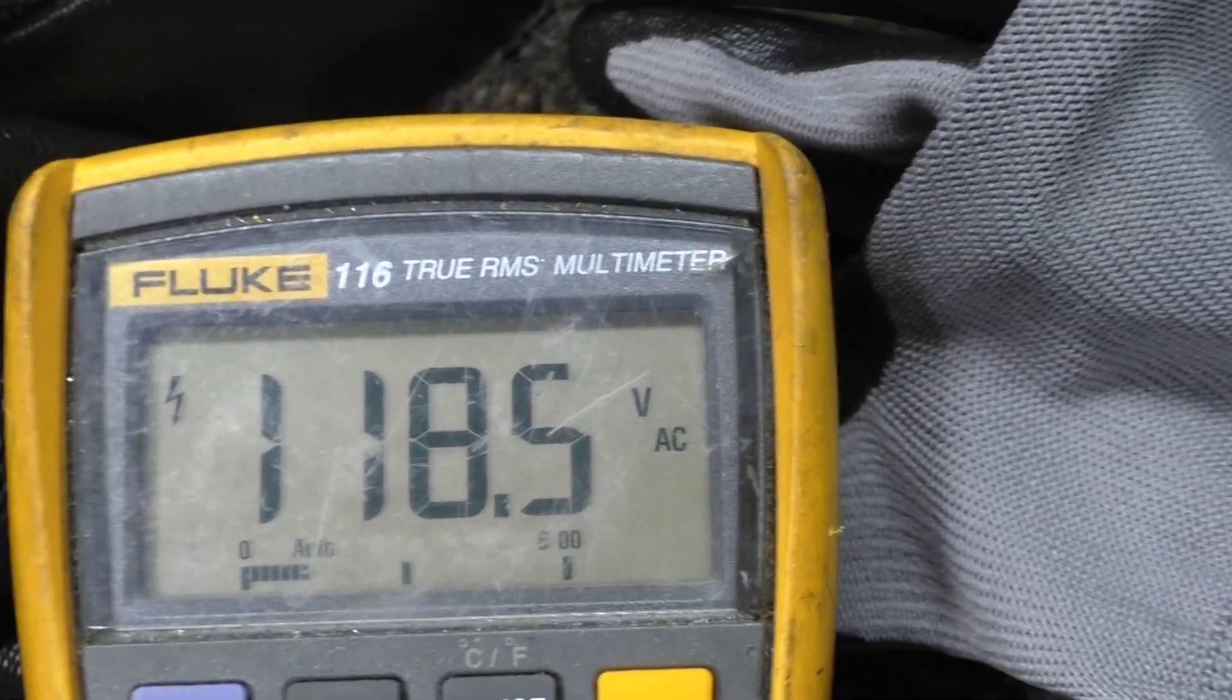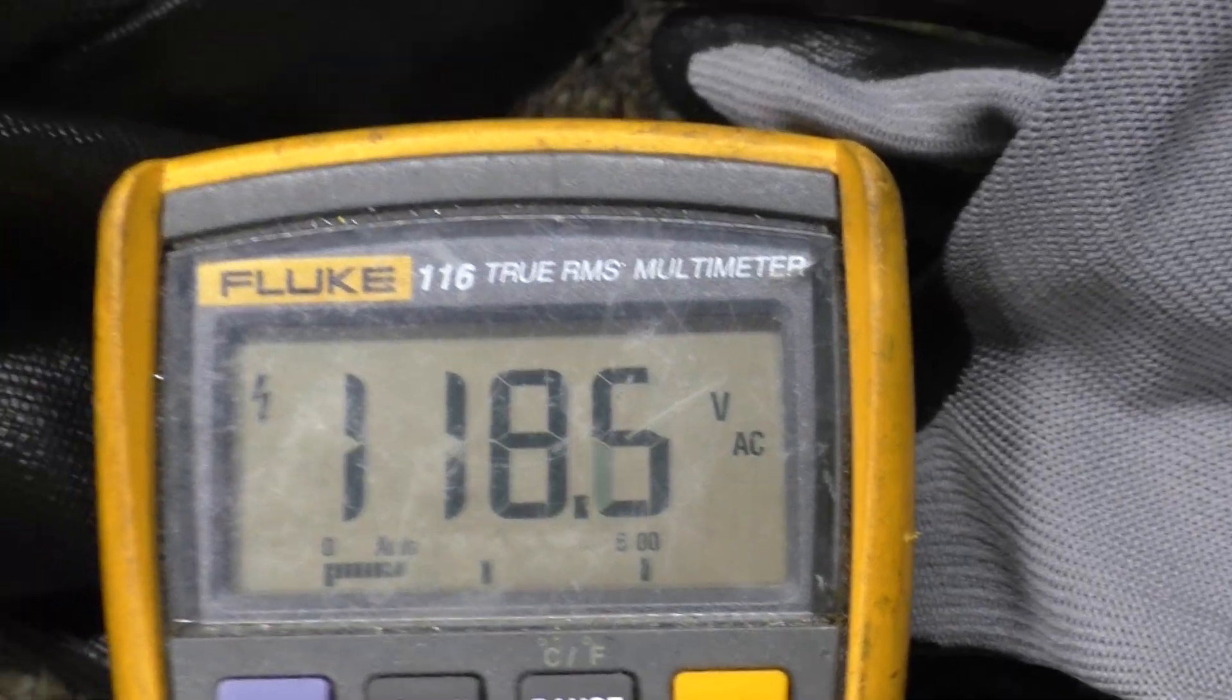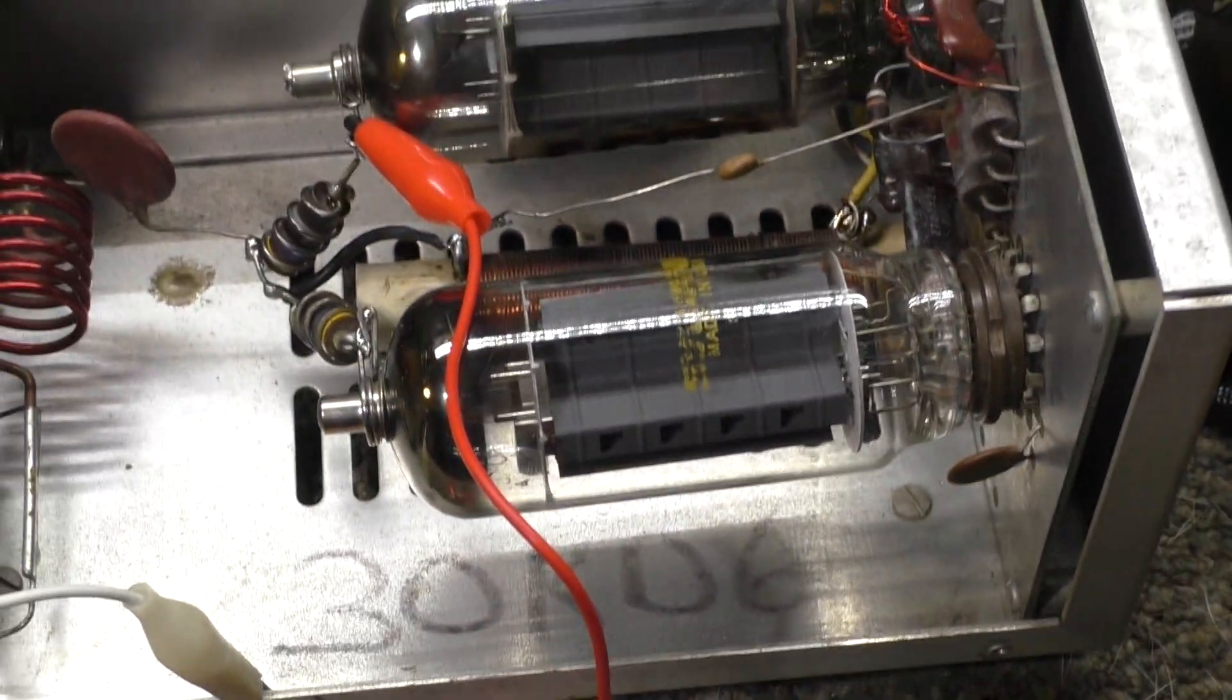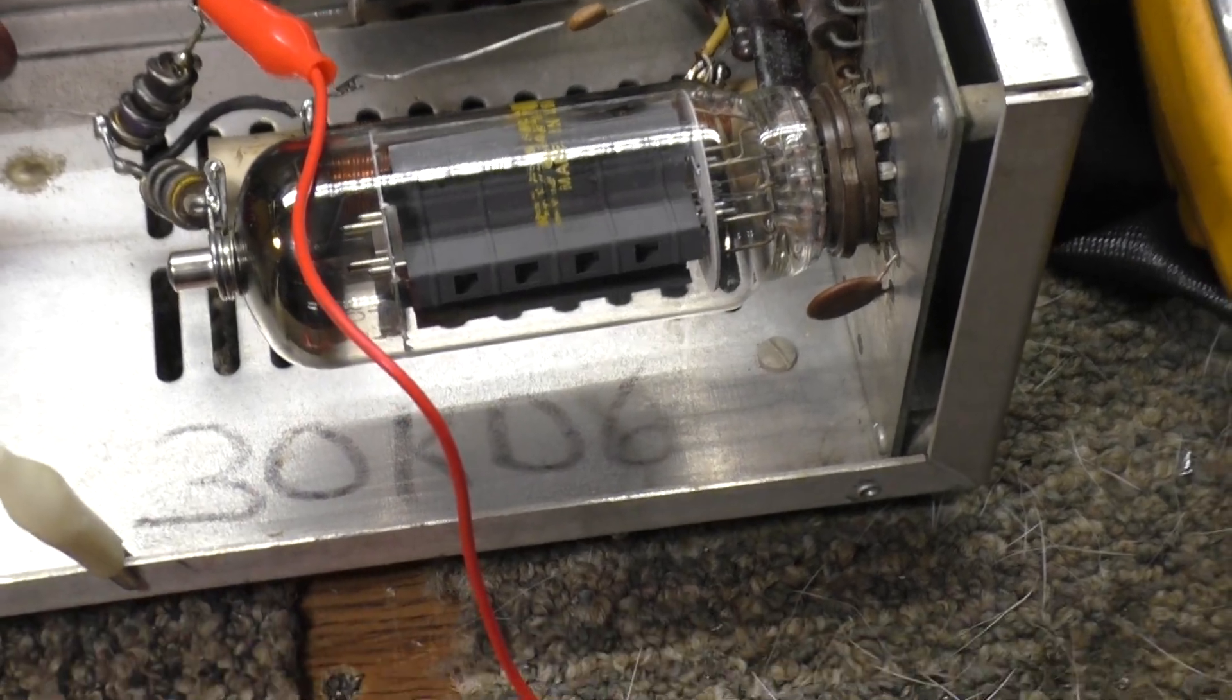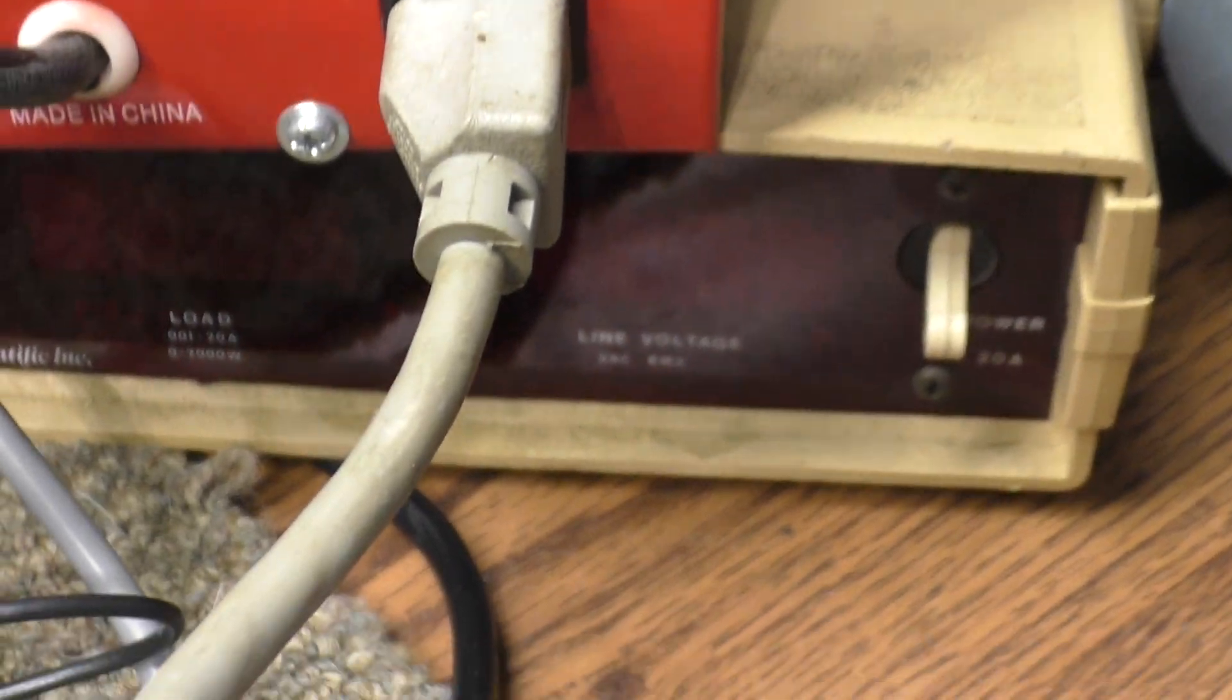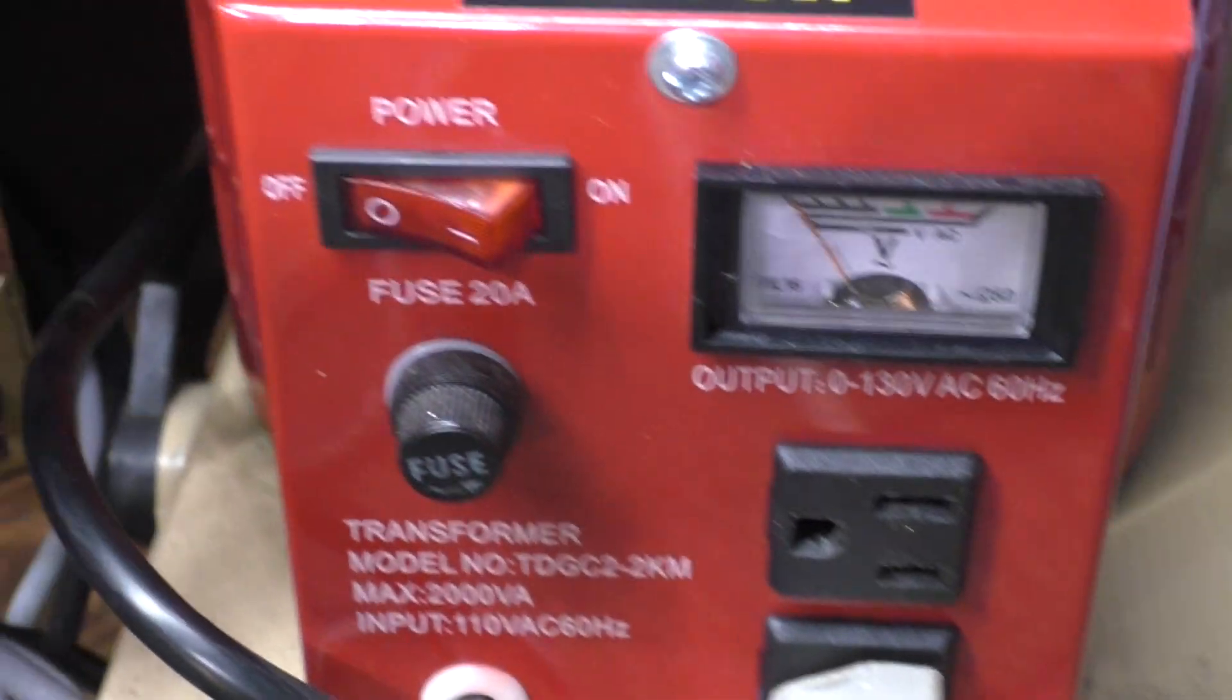But everything's discharged, got bleeders in there. With everything off, I'm getting 118 volts, full direct AC line voltage on this thing. That shouldn't be. That's dangerous. I would not expect that at all.